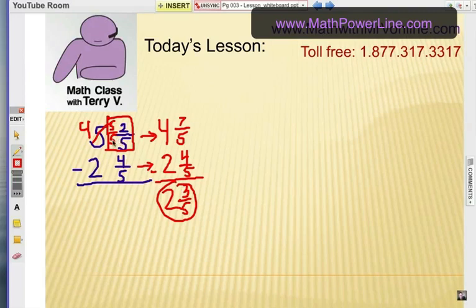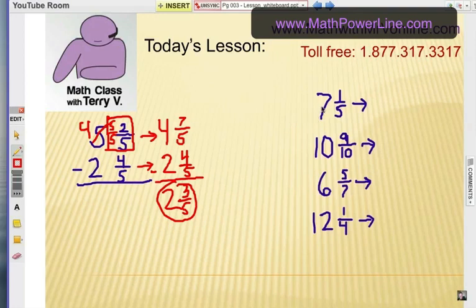Here we go. Let's look at these four examples. I'll show you the shortcut. To borrow from the 7, it's going to become a 6. Now, that 1 I borrowed becomes 5 fifths, but we combine it with 1 fifth. Here's the idea: change the 7 to a 6 and add these two numbers together. Because it's 5 fifths plus 1 fifth is 6 fifths. So we just keep the same denominator and add these two numbers together.